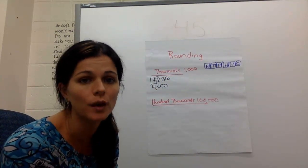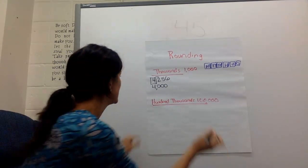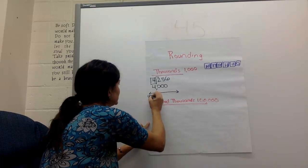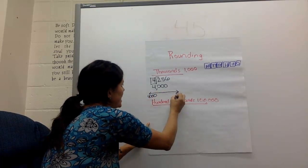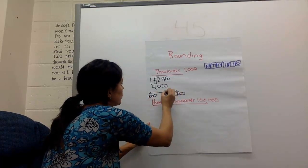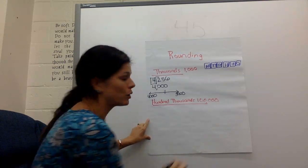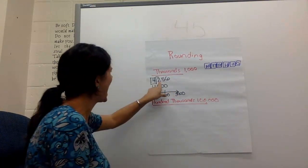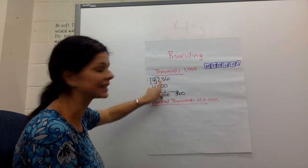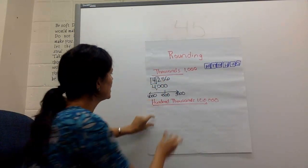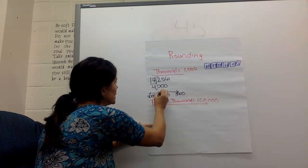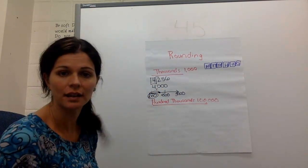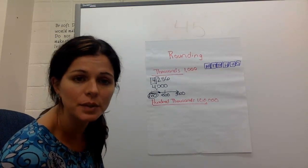It's also saying that 4,256, if you had your number line, here's 4,000, here's 5,000. Right in the middle or midway would be 4,500. And I know 256 is less than 500, so it's closer to 4,000. It's another way to check if you got your answer right. Let's do another one.